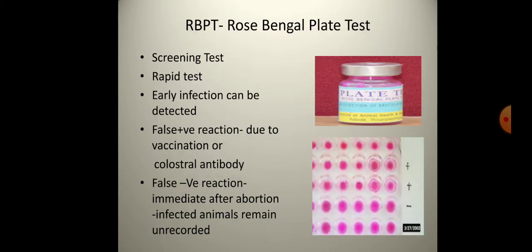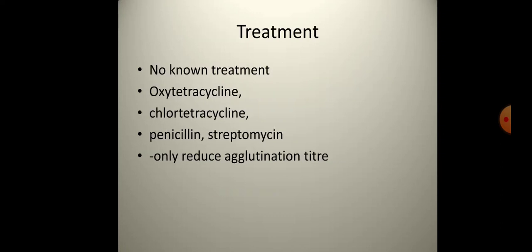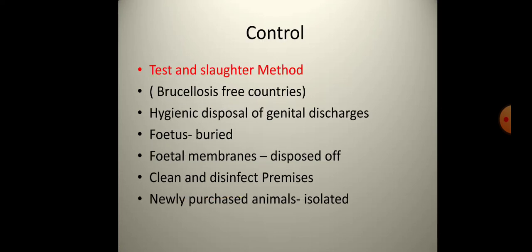The Rose Bengal Plate Test (RBPT) is also used. For differential diagnosis: Trichomonas causes abortion at two to four months; leptospirosis causes abortion at six months or later; IBR causes abortion at five to six months; and mycotic abortion occurs at two to seven months, compared to brucellosis which causes abortion in the last trimester. Regarding treatment, there is no definitive treatment currently; oxytetracycline, penicillin, and streptomycin can be used but only reduce agglutination titers.